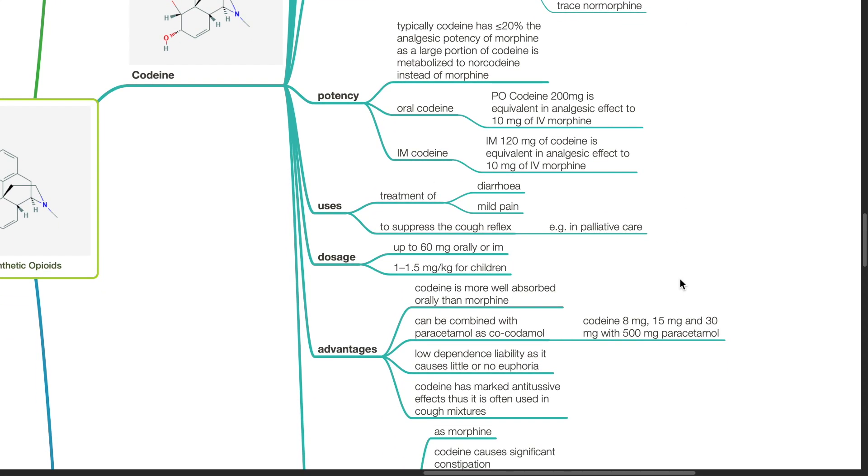Uses of codeine. It is used to treat diarrhea and mild pain and to suppress the cough reflex, such as in palliative care. Dosage: up to 60mg orally or IM, 1 to 1.5mg per kg for children.